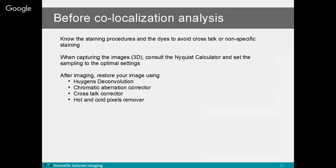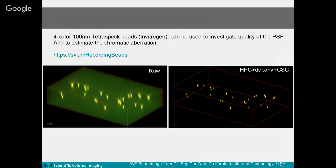After imaging, restore the image using Huygens deconvolution to correct PSF blurring; use the chromatic aberration corrector if needed; use the crosstalk corrector if you can't avoid crosstalk; and Huygens can also remove hot and cold pixels from your CCD or CMOS. This example shows a beads image before restoration — before deconvolution, before chromatic aberration correction, before hot pixel removal — and after all corrections, the image is ready for co-localization analysis.